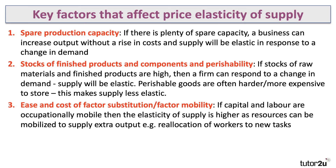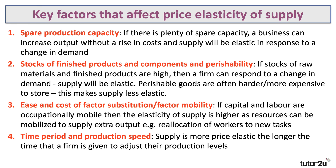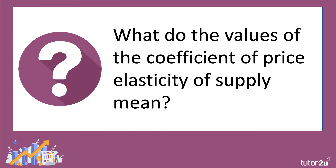Third: the ease and cost of factor substitution. If land, labor, and capital are occupationally mobile, you can bring resources quickly into play when demand increases, making supply elastic. If those resources are highly specific, it tends to make supply inelastic. Fourth: the timeframe for production. Supply tends to be more price elastic the longer firms are given to adjust their production level. In the immediate period, supply is often limited and hard to change, but in the long term, production can respond more fully.